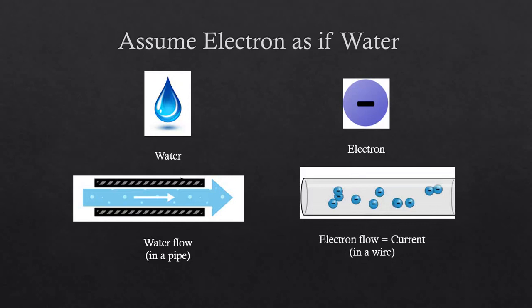Current is given by the formula I equals Q over t. Q means the charge divided by time. The unit for charge is coulomb per second, or simply A for ampere. It means how many electrons are able to pass through this wire in every second.